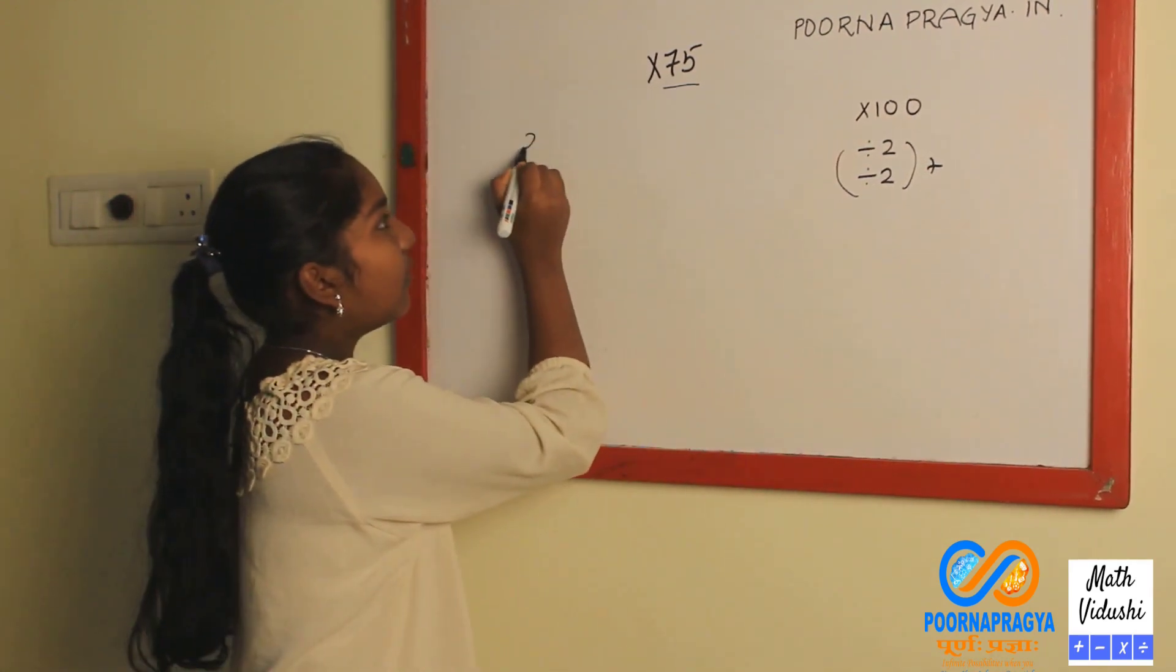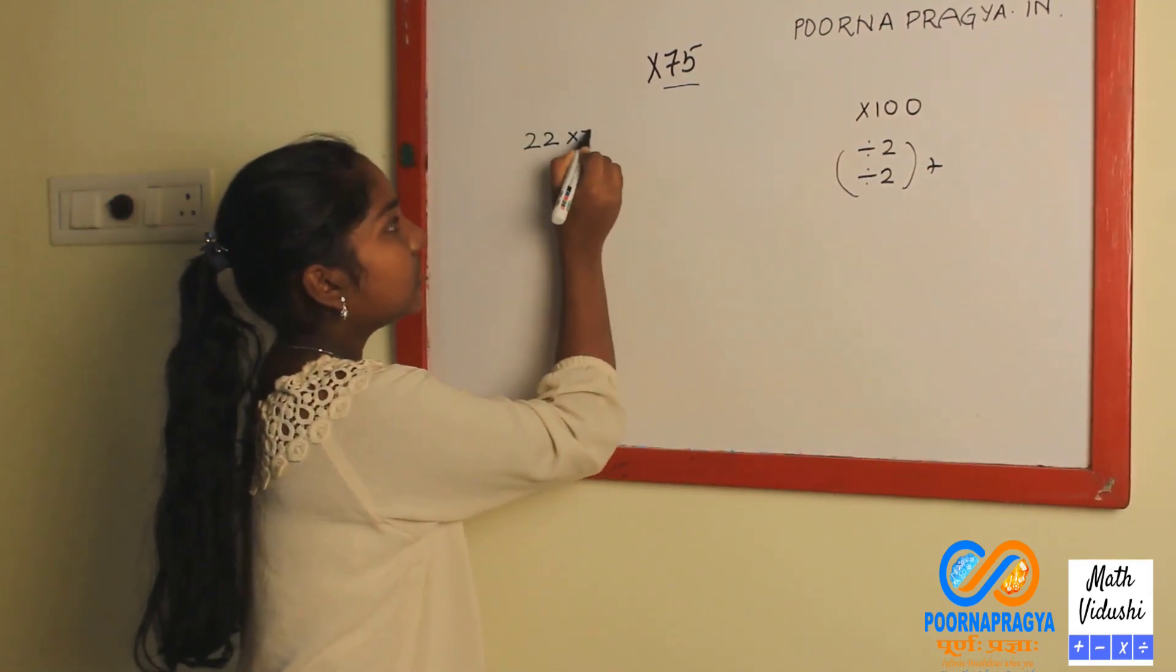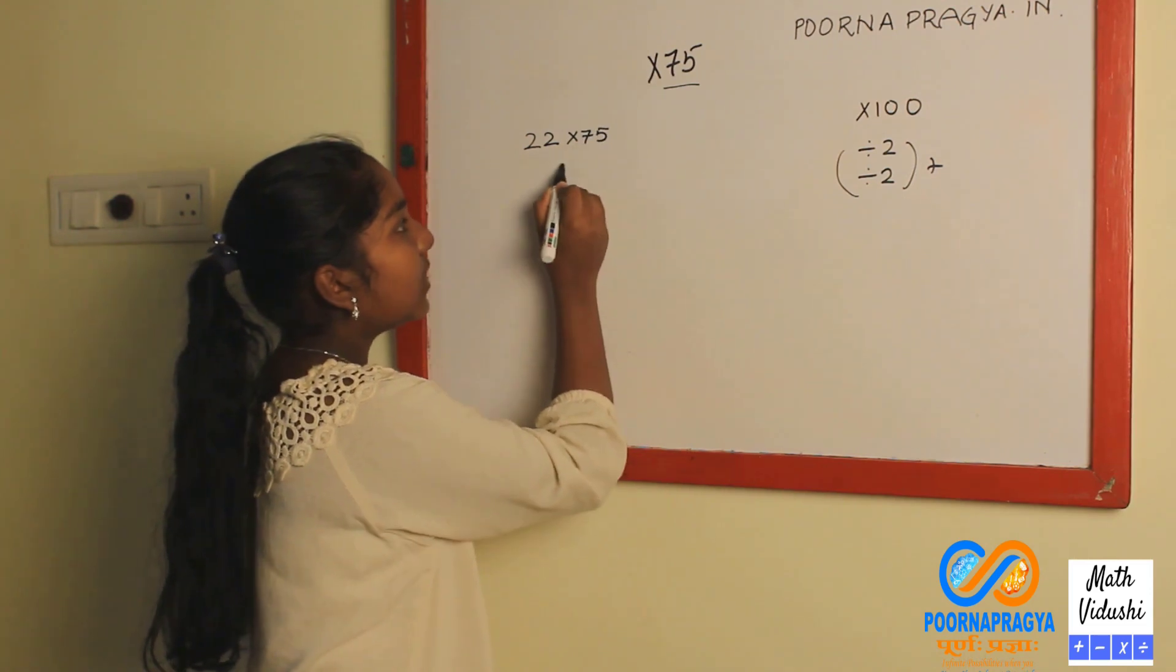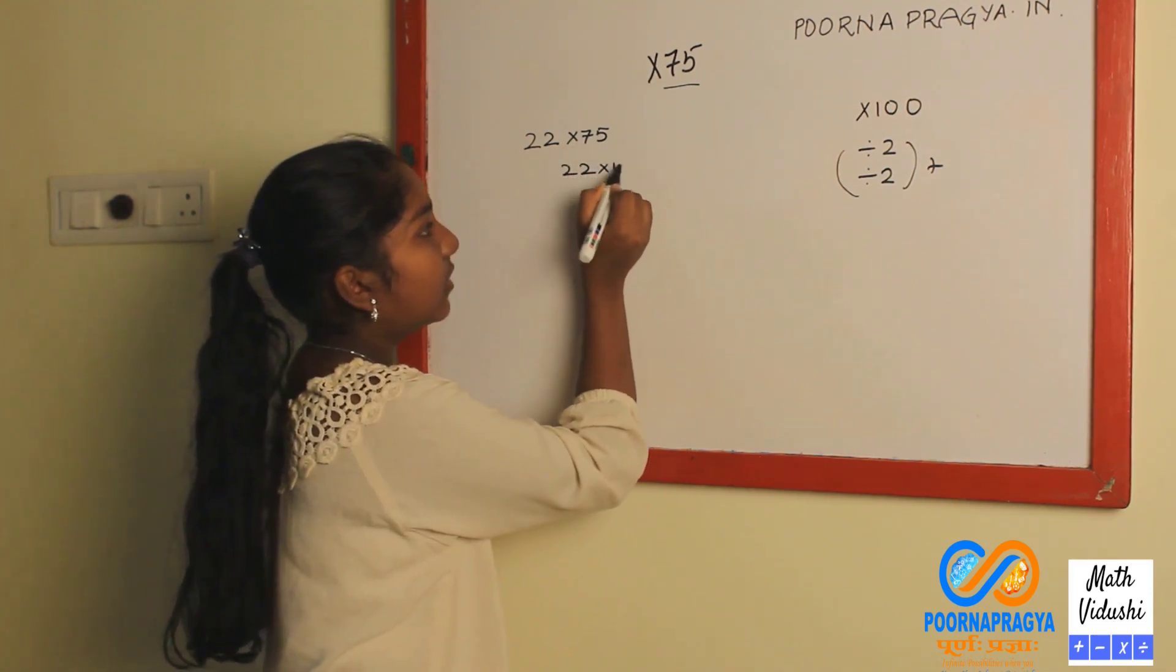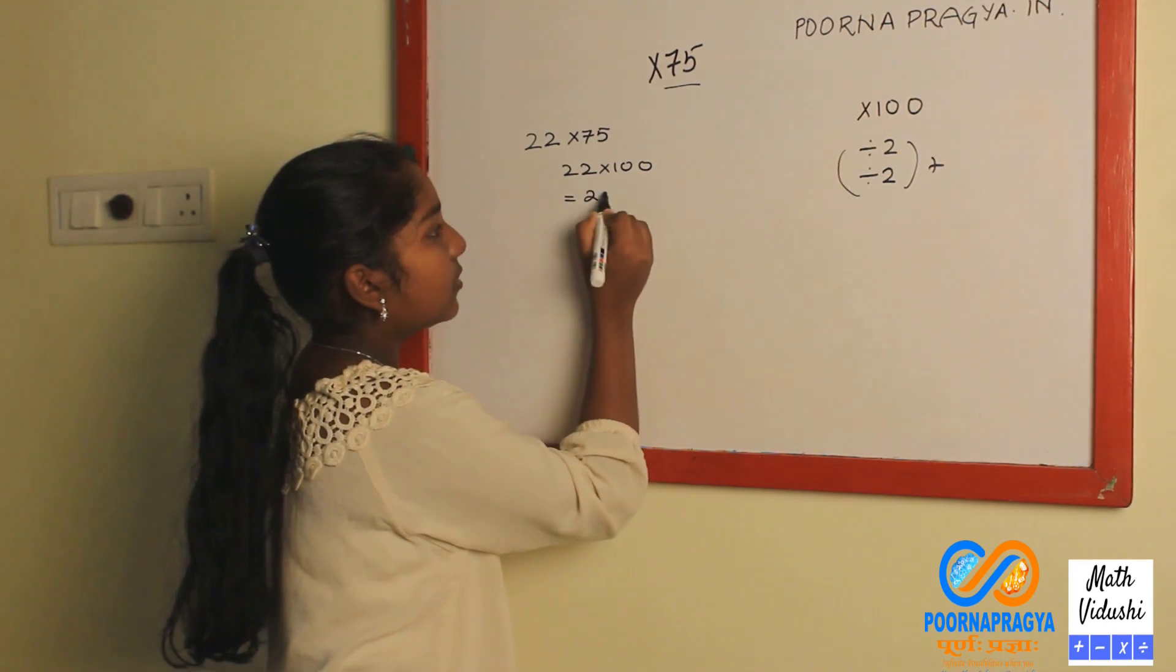Let's take an example of 22 into 75. First multiply 22 into 100. You will get 2200.